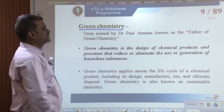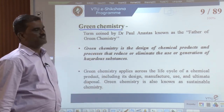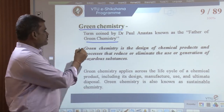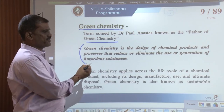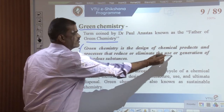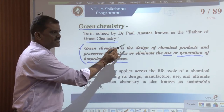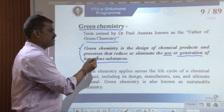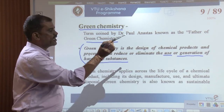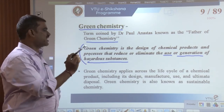What is green chemistry? The term green chemistry was given by Dr. Paul Anastas, known as the father of green chemistry. Green chemistry is the design of chemical products and processes that reduce or eliminate the use or generation of hazardous substances. It reduces the use or generation of hazardous substances.